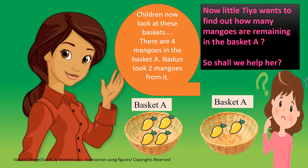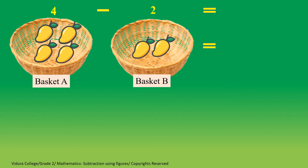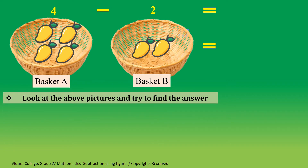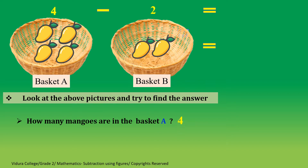now look at these baskets. There are 4 mangoes in basket A. Nadun took 2 mangoes from it. Now little Tia wants to find out how many mangoes are remaining in basket A. So shall we help her? Look at the above pictures and try to find the answer. How many mangoes are in basket A? 4 mangoes.